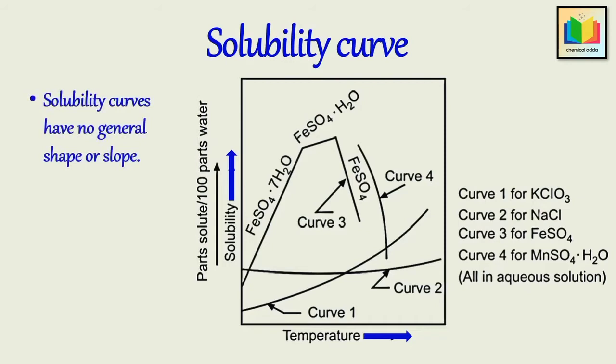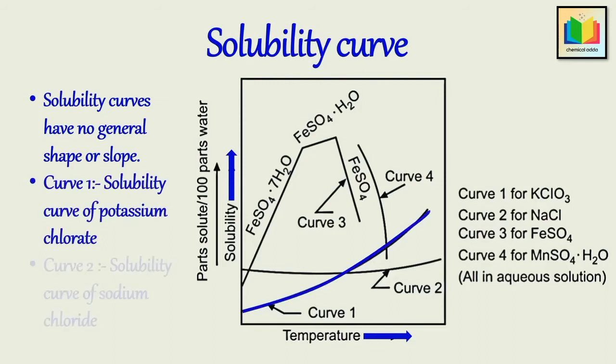In this figure, we can see solubility curves of potassium chlorate, that is curve 1, and solubility curves of sodium chloride, that is curve 2, are continuous solubility curves. As they show no sharp breaks anywhere, but in case of potassium chlorate, the solubility increases with temperature. So, it can be readily crystallized by cooling its saturated solution.